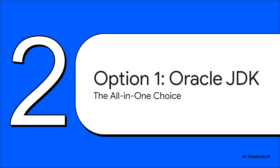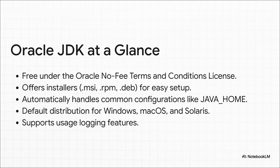Let's start with Oracle JDK. The best way to think about it is as the convenient, all-in-one package — it just works. The magic word is ease. It's free for commercial use, but its real superpower is the installer. It doesn't just dump a bunch of files onto your computer — it handles the annoying configuration for you, like setting up your JAVA_HOME variable. That can save you a real headache, which is exactly why it's the go-to default on Windows and macOS.